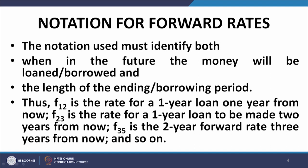For example, if I use the symbol f(1,2), it means the forward rate relating to a loan initialized at t equal to 1 year with a 1-year maturity, repaid at t equal to 2 years. Similarly, f(3,5) represents the rate applying to a loan initialized at t equal to 3 years, with a maturity of 2 years, repaid at t equal to 5 years. We confine our identification to the point in time the loan is released and the point in time the loan is repaid; the difference gives the tenure.